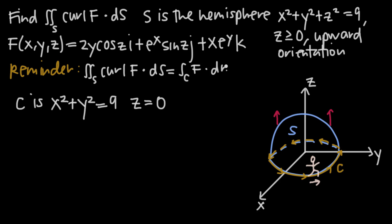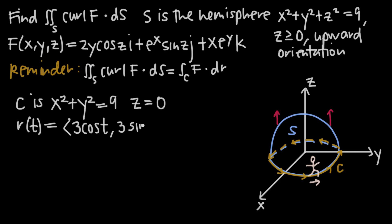To find curve c, we plug z = 0 into the equation, dropping the z² term, giving us x² + y² = 9 when z = 0. Because this is a circle with radius 3, we parametrize it as the vector function r(t) = (3cos t, 3sin t, 0). We'll need the derivative: r′(t) = (−3sin t, 3cos t, 0). We also need the vector field f in terms of r(t), so we'll plug in x = 3cos t, y = 3sin t, z = 0 to get f(r(t)).